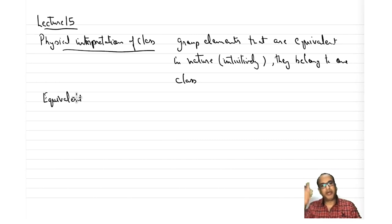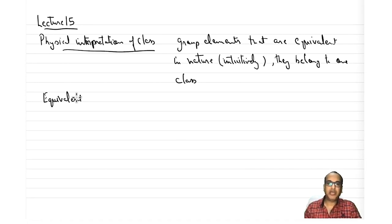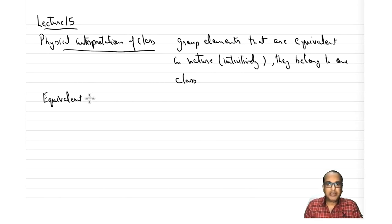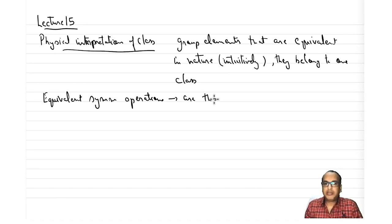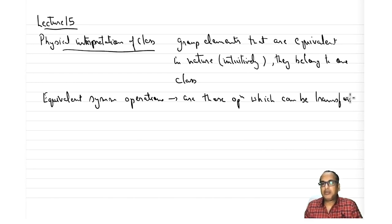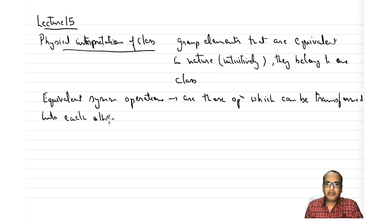If we can identify equivalent symmetry operations, we can simply group them into one class and don't have to calculate all the similarity transformations for each individual group element — that will be easier. Equivalent symmetry operations are those operations which can be transformed into each other by a third operation in the group.